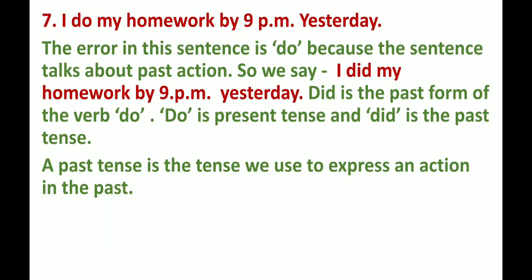Number 7: I do my homework by 9pm yesterday. The error in this sentence is 'do', because the sentence talks about a past action. So we say: I did my homework by 9pm yesterday. 'Did' is the past form of the verb 'do'. 'Do' is present tense and 'did' is past tense.